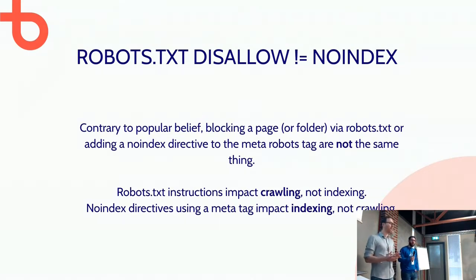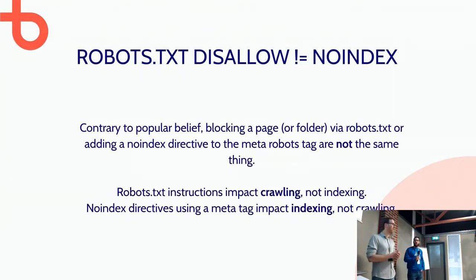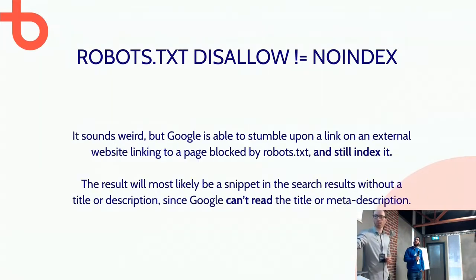If you block Google from crawling it, it will never see the noindex instruction and the page will remain in the index indefinitely. To recap: robots.txt impacts crawling, and the noindex meta tag impacts indexing. Those are two very separate things.